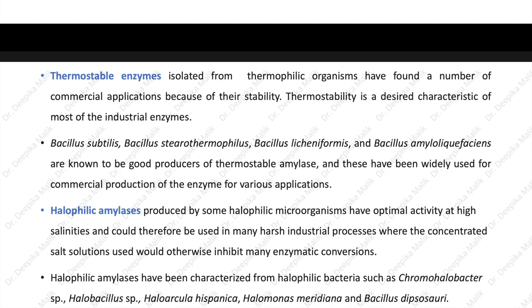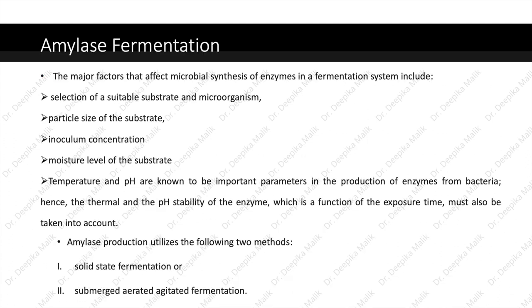Bacillus subtilis, Bacillus stearothermophilus, Bacillus licheniformis and Bacillus amyloliquefaciens are known to be good producers of thermostable amylase and have been widely used for commercial production of the enzyme. Thermostable enzymes isolated from thermophilic organisms have found a number of commercial applications because of their stability, which is the desired characteristic of most industrial enzymes. Halophilic amylases produced by halophilic microorganisms have optimal activity at high salinities and could be used in harsh industrial processes involving concentrated salt solutions. These have been characterized from halophilic bacteria such as Chromohalobacter species, Halobacillus species, Haloarcula hispanica, Halomonas meridiana and Bacillus dipsosauri.